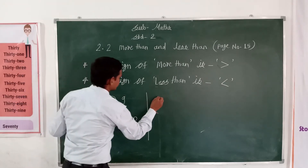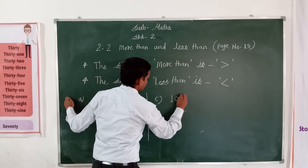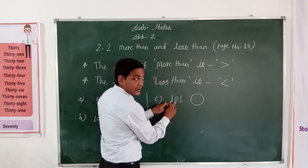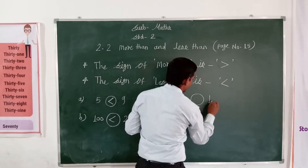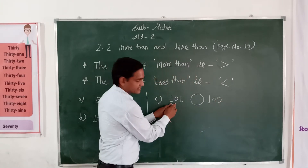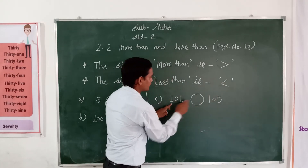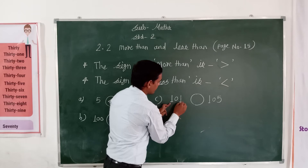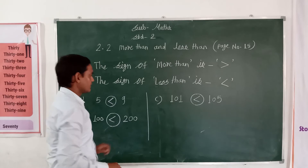Now next. The numbers are 101 and 105. So this number is less and this number is greater. We write down the less than sign here: 101 is less than 105.